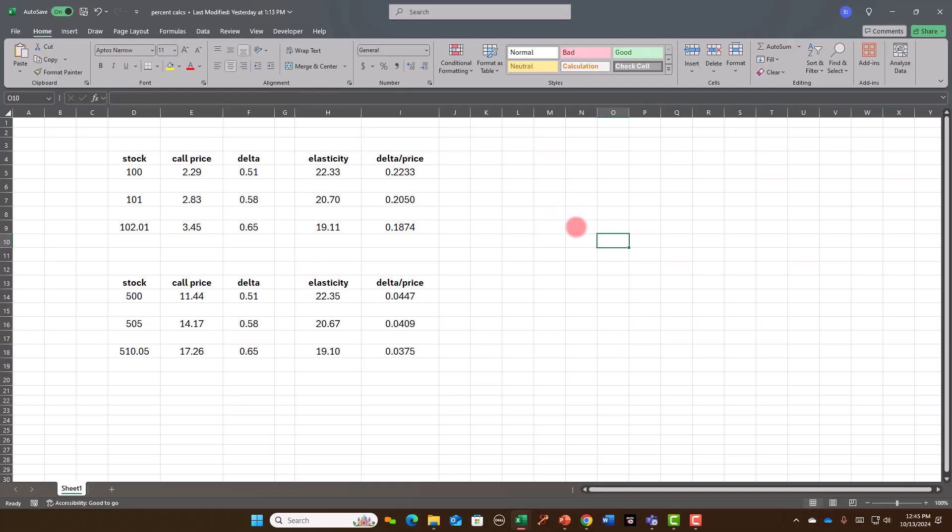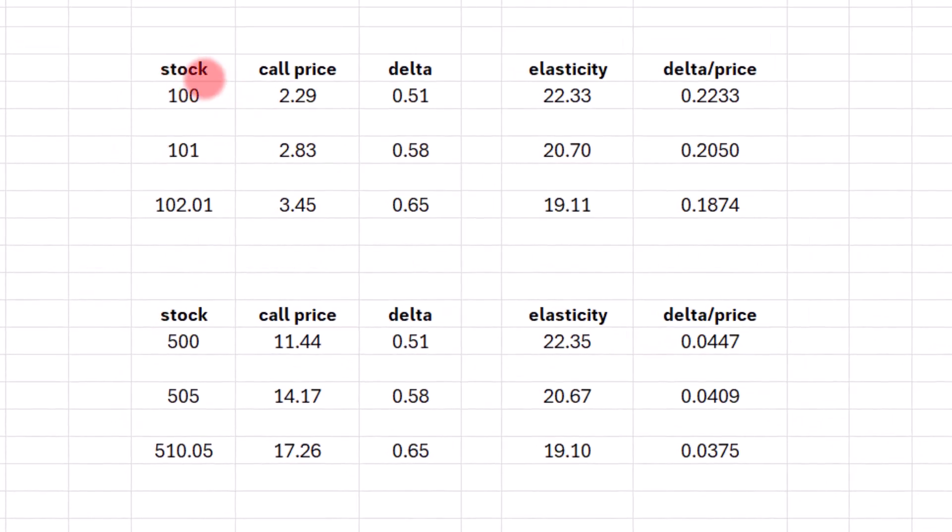Alright, so now into our Excel spreadsheet. And I've got over here on the left, the stock is at 100. I'm going to increase it by 1% to 101, and then increase it by 1% again to 102.01. I'm going to feed that into a pricing model. And I came up with 229 with the stock at 100, 283 with the stock at 101, and 345 with the stock at roughly 102.